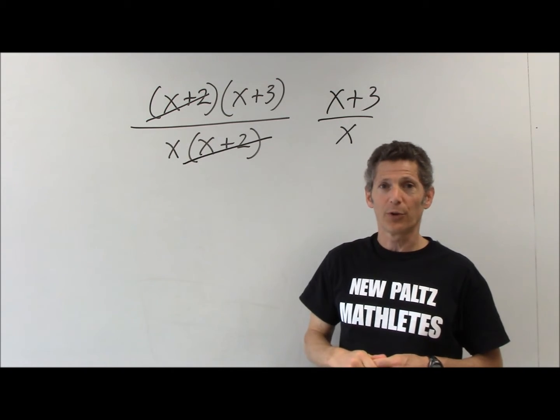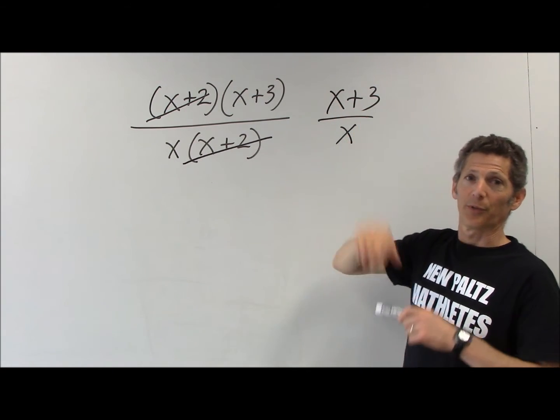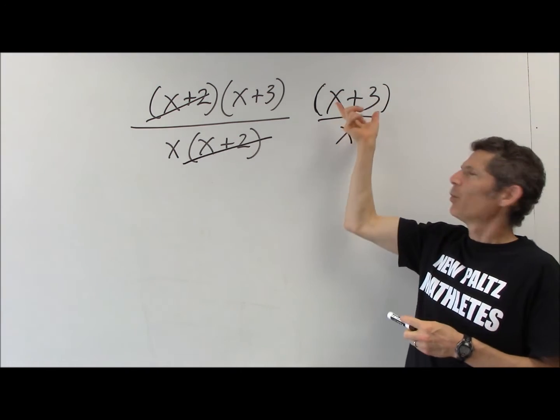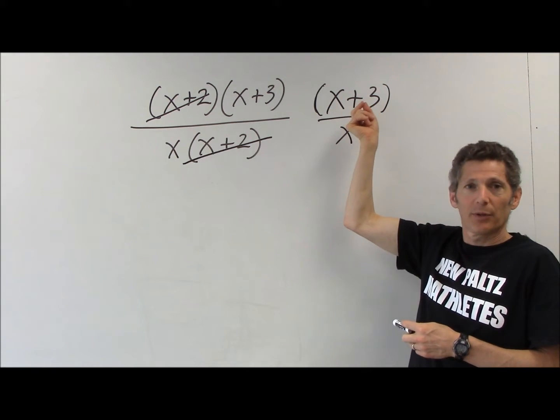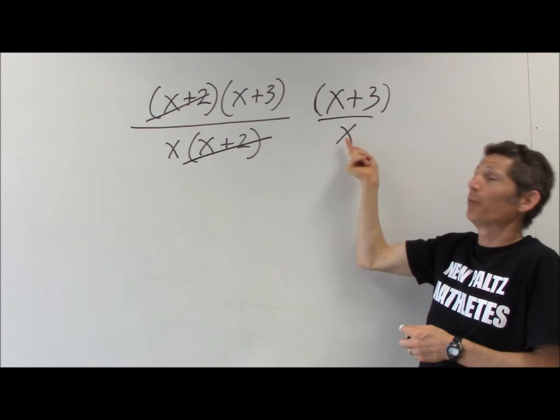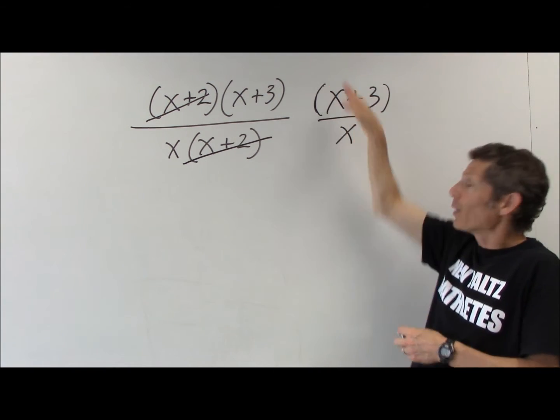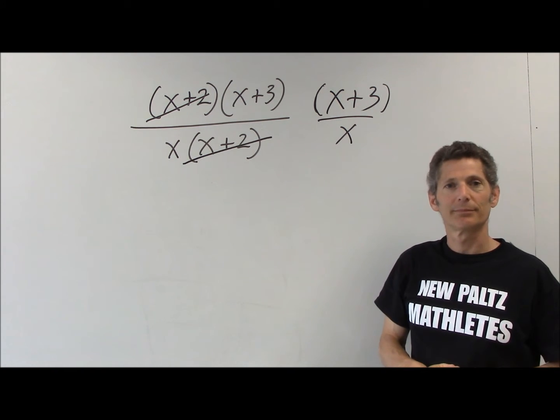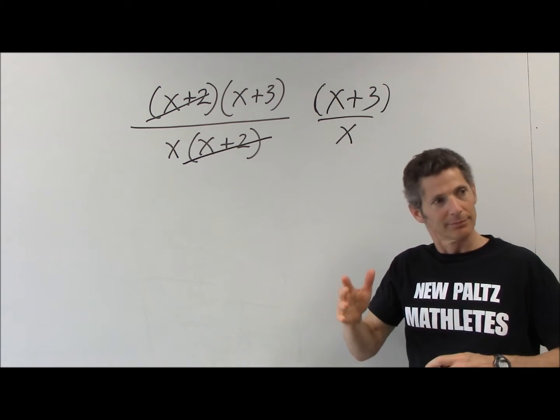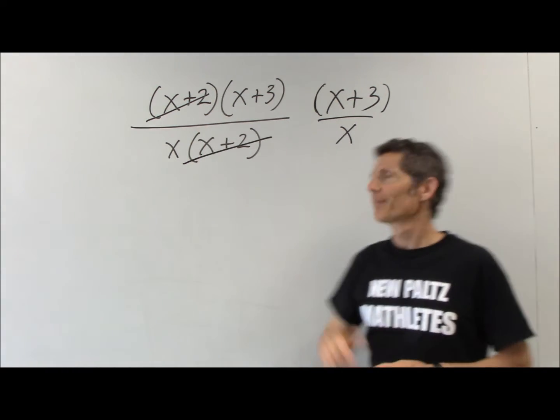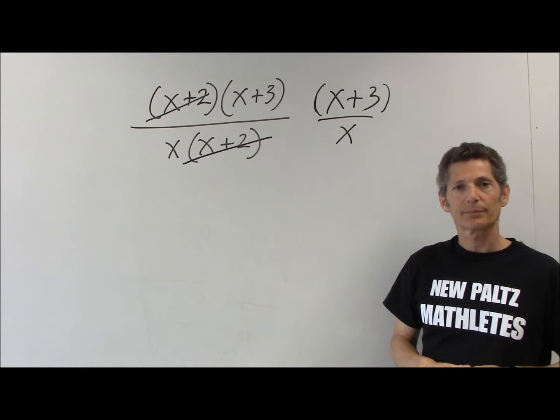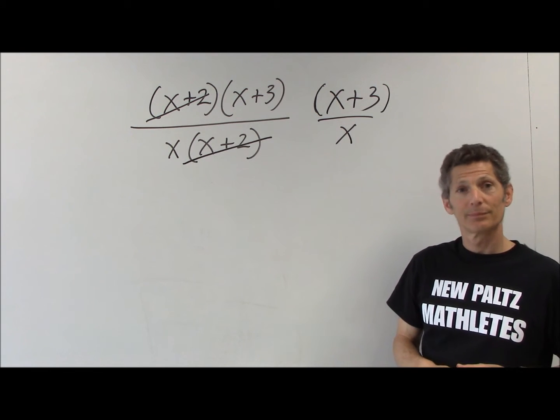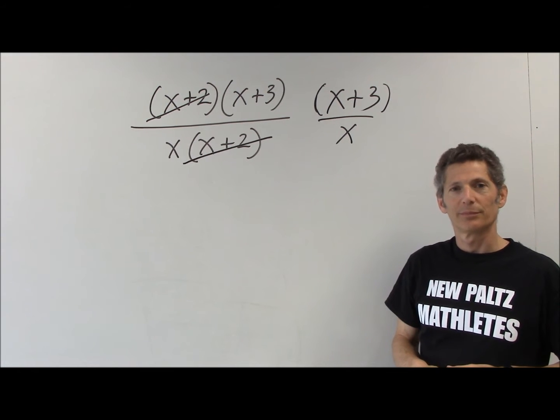Now I cannot simplify any further because I'm adding something to the 3. What's implied is the parentheses are still there—this must happen before the division. I cannot cancel or divide. When you're multiplying things you can divide, but when you're adding things you can't divide. The parentheses are implied, which means you have to do x plus 3 and it's that quantity being divided by x.